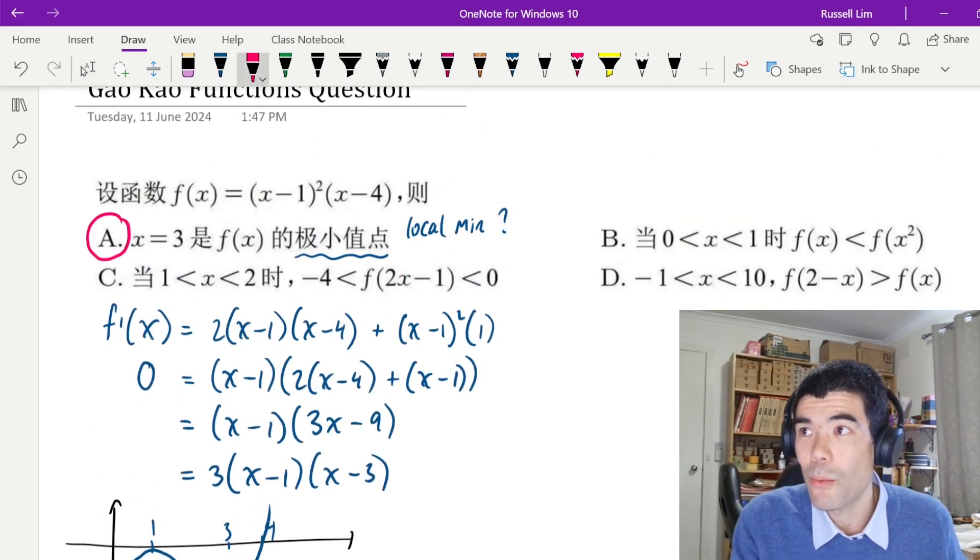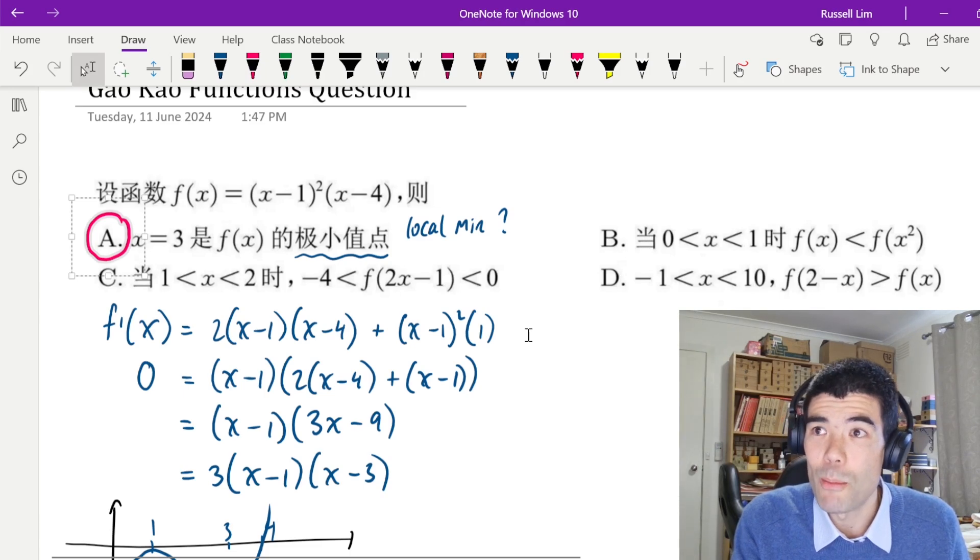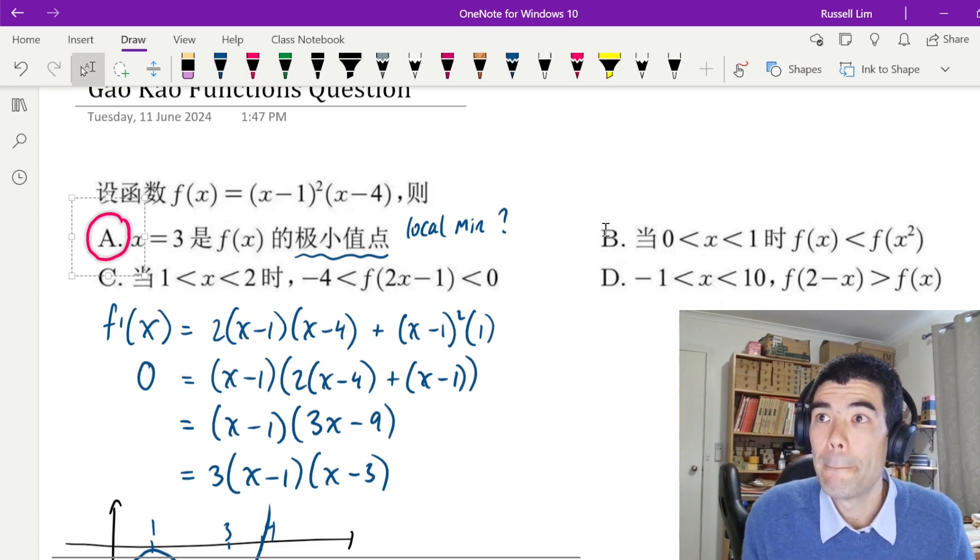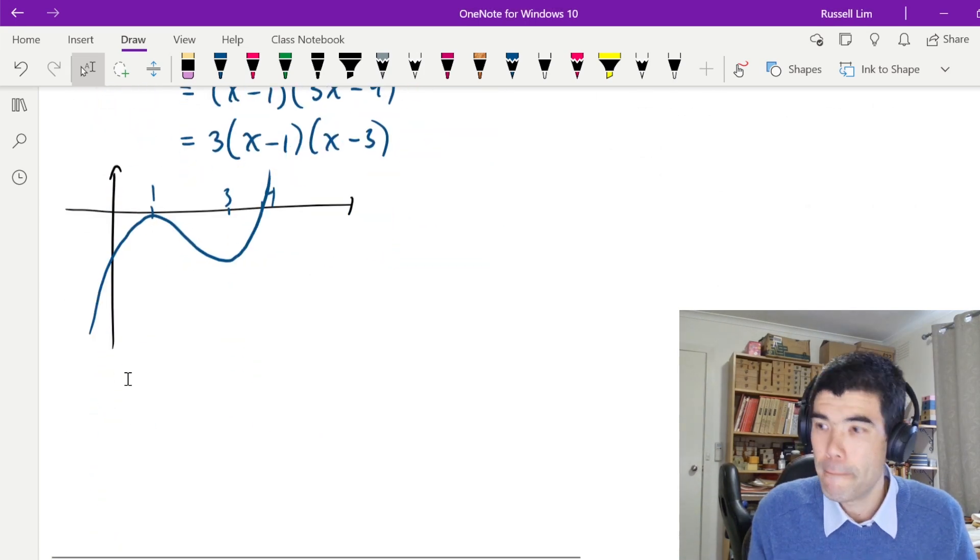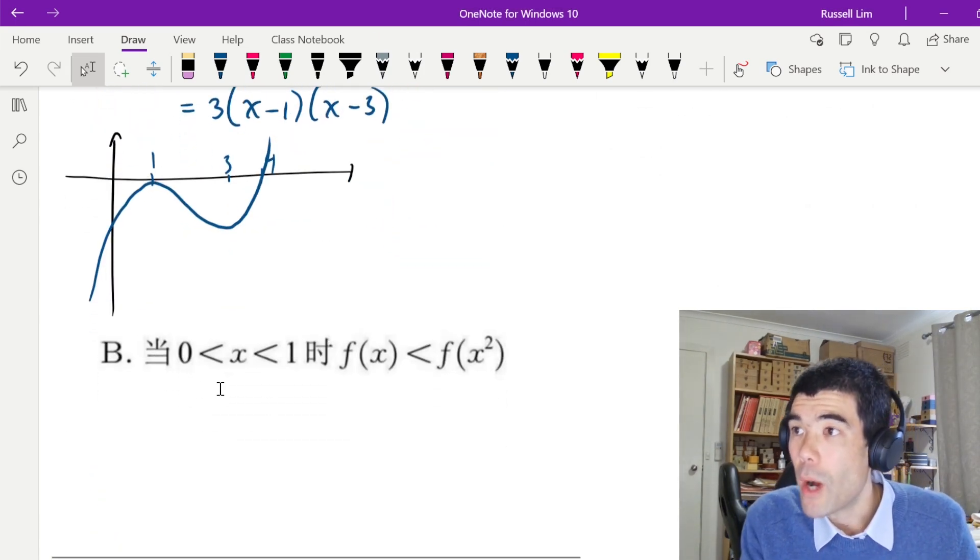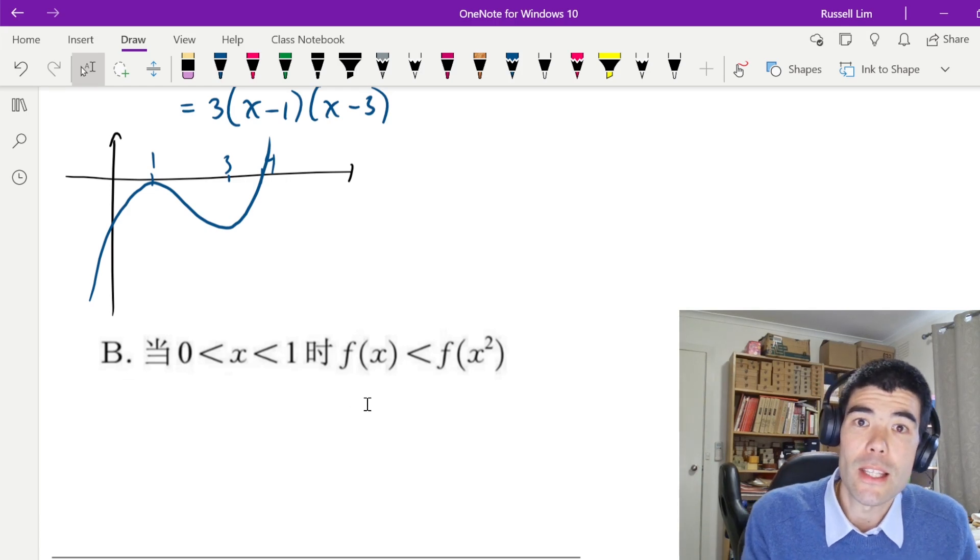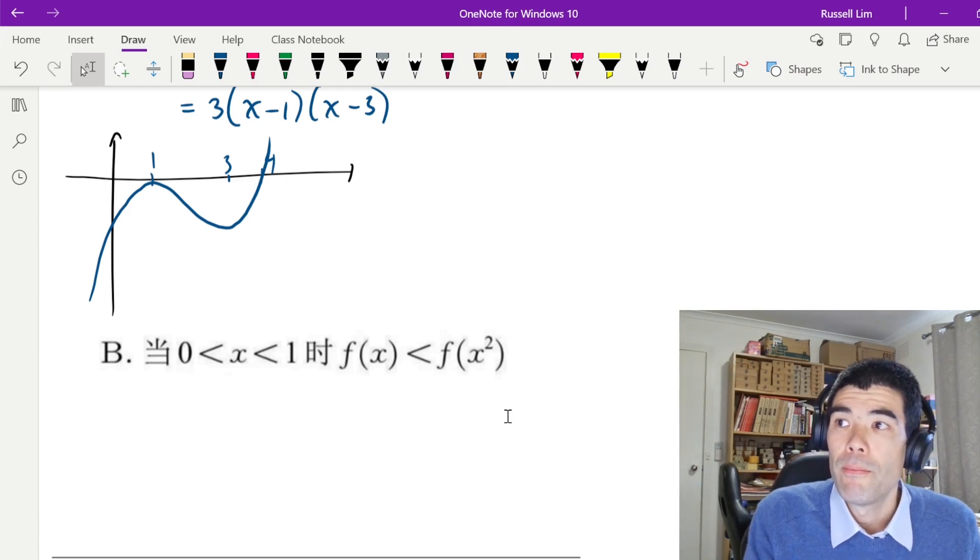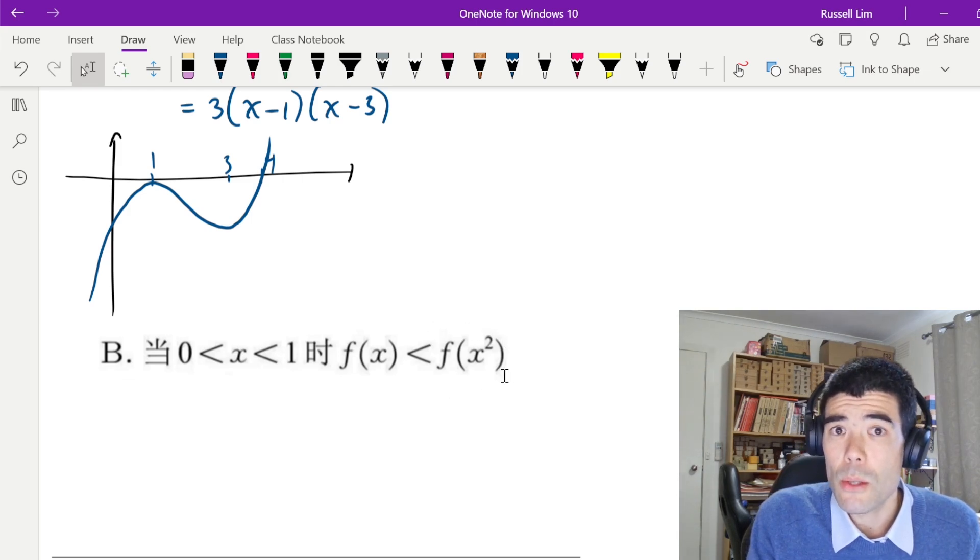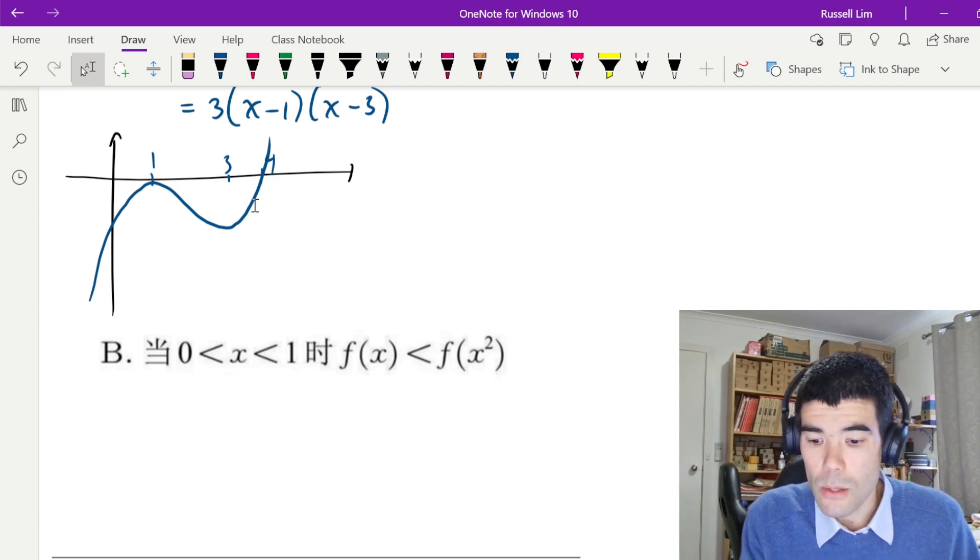But of course, we're not done with the question. We need to test the three other options. So let's look at option B now. Alright, when x is between 0 and 1, is it true that f(x) is less than f(x²)? And that sounds a bit confusing, and we're certainly not going to try to sketch a graph of f(x²). But what we can do is just focus on the little part of the graph between x is 0 and x is 1.